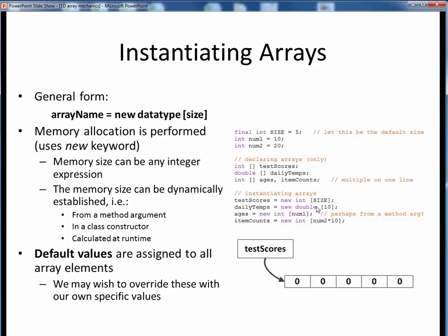For example, here we're saying that we want the compiler to set aside enough room to store 5 ints, or 10 doubles, or 10 ints. Notice that we're using a constant, a literal value, and a variable to make these allocations. In this last example, we can even use an expression that evaluates to an int.